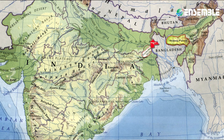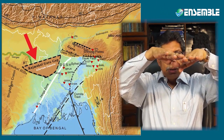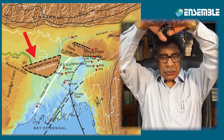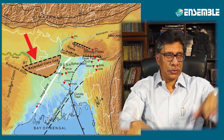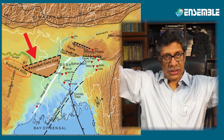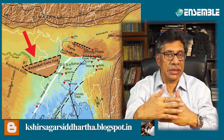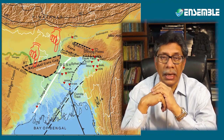The Rajmahal-Garo Gap was formed due to downfaulting. The downfaulted section is covered under thick deposits of alluvium brought by the Ganga and the Brahmaputra. There was an extensive plateau whose central portion subsided and sank. One portion left over was called Rajmahal, the other was called Garo, and the faulted trough in between was gradually filled up by alluvium brought by the Ganga and Brahmaputra.